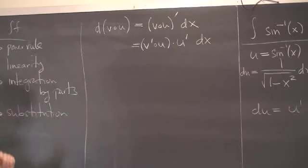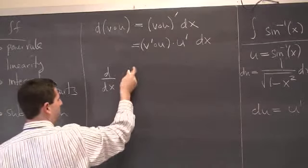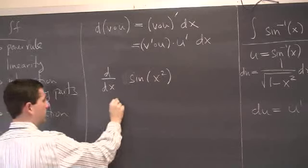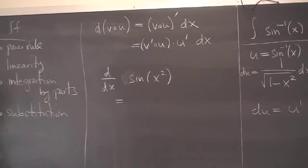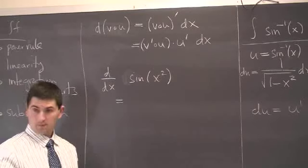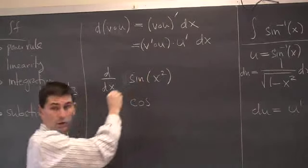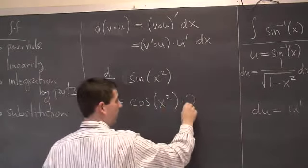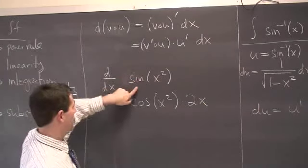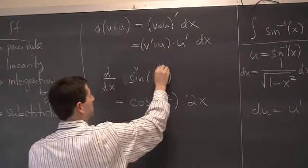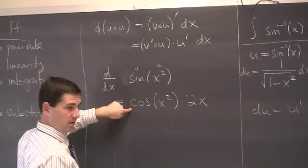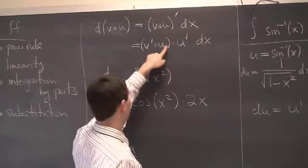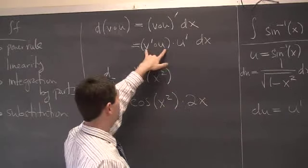Quick example: if I took the derivative of sine of x squared, it's cosine of x squared times the derivative of x squared, which is 2x. The outside function is v — that's sine — and the inside function is u equals x squared. The derivative of v, which is sine, is cosine, and you still evaluate it at u equals x squared, then multiply by u-prime equals 2x.